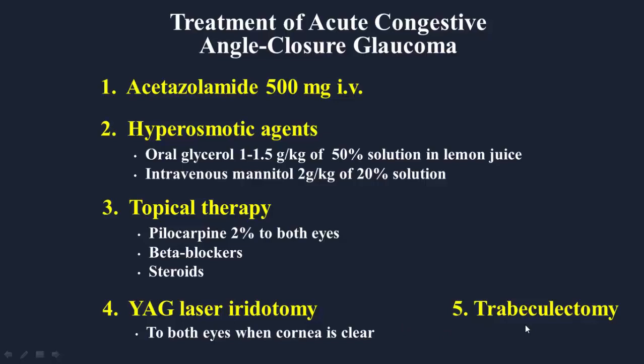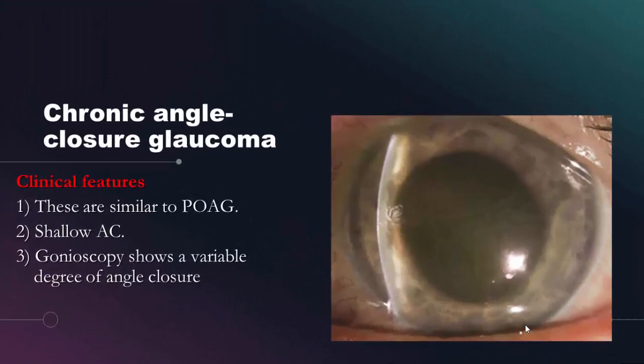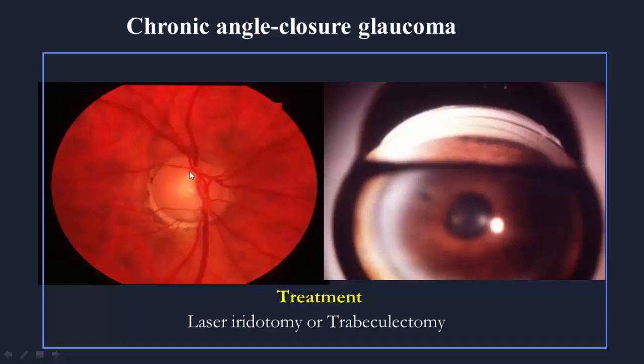Chronic angle closure glaucoma has features similar to primary open angle glaucoma. In both types, there is a gradual visual field change and optic disc changes, and the patient does not complain of the signs of acute congestive glaucoma. On examination, we notice a shallow anterior chamber, and gonioscopy shows a variable degree of angle closure. Photos demonstrate optic disc changes caused by chronic primary angle closure glaucoma, with gonioscopy showing a shallow angle. Treatment is by laser iridotomy if most of the angle is open, and surgical trabeculectomy in severe cases of angle closure to bypass the angle.